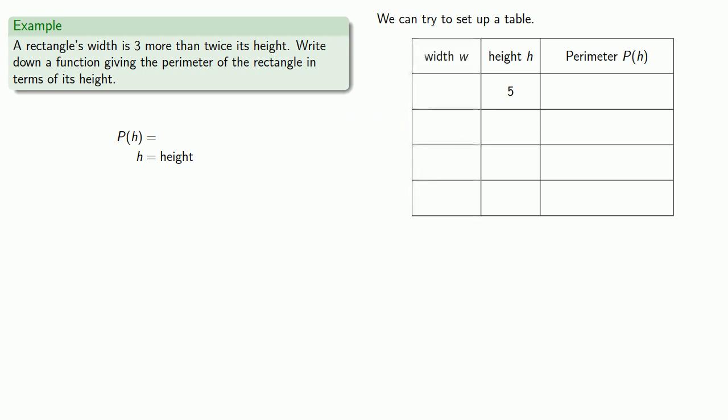Now notice that our perimeter is supposed to be a function of the height only. It is not supposed to be a function of the width. Still, it's helpful to have this column even if it doesn't show up in our final step. It's important to remember paper is cheap. Write stuff down. So the thing to remember is that we are told that the width is 3 more than twice the height. So if we know what the height is, we should be able to calculate what the width is.